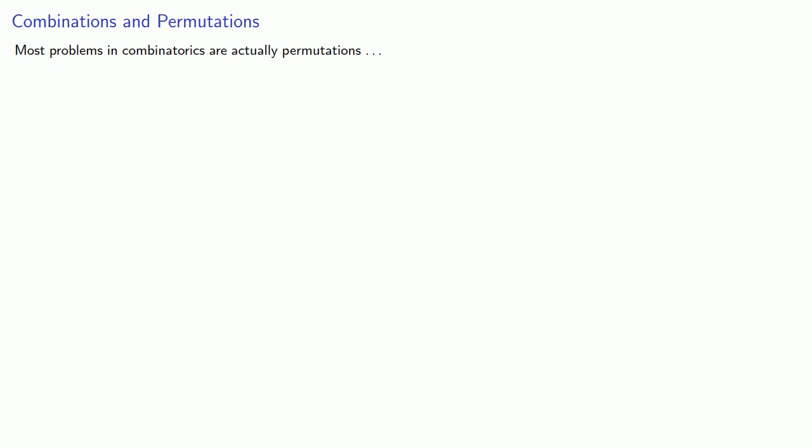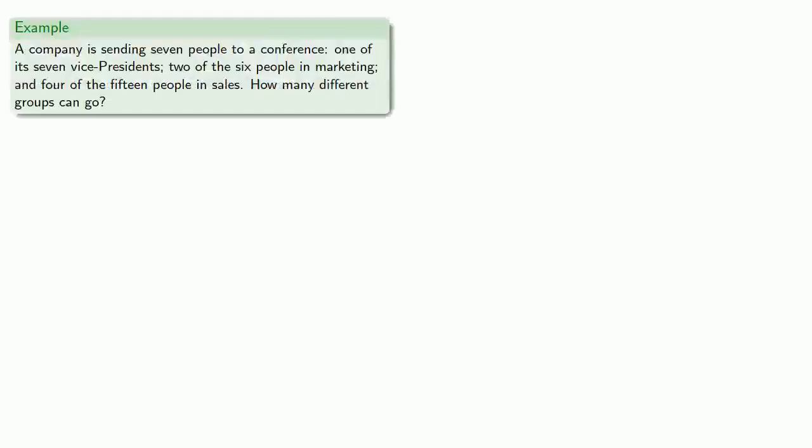Most problems in combinatorics are actually permutations, where the number of choices is itself a combination. For example, a company is sending seven people to a conference: one of its seven vice presidents, two of the six people in marketing, and four of the fifteen people in sales. How many different groups can go?